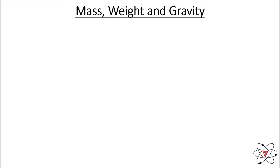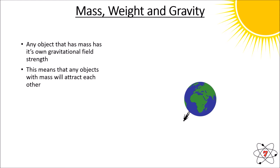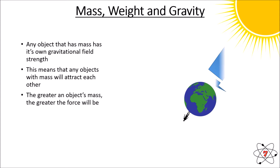Any object that has mass — which is essentially every single thing in the universe — has its own gravitational field strength. This means that any object with mass is attracted to any other object with mass. Generally, the greater the object's mass, the greater that force is going to be. So the Earth is attracted to the Sun, but the Sun is also attracted back to the Earth. Because the Sun is so much more massive than the Earth, its gravity is much stronger.